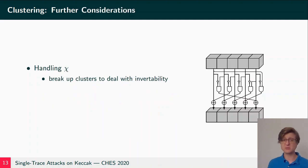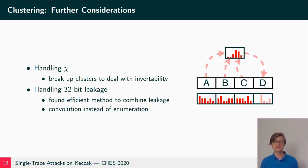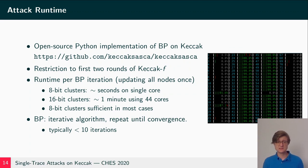There are a couple of other considerations that we have to deal with to get an efficient attack. For instance, for chi we have to break up clusters again into single bits to deal with invertibility problems. And for 32-bit leakage, we have to combine multiple 32-bit words, multiple 8-bit clusters, and we have to combine them using the 32-bit leakage information. We also found an efficient method to do this, and this method uses convolution instead of enumeration.